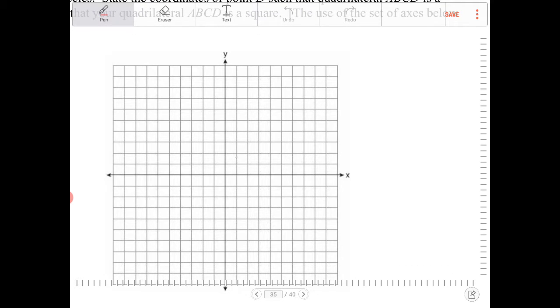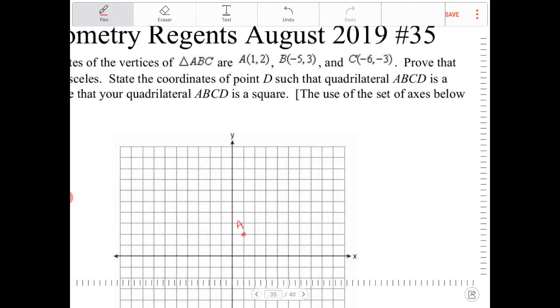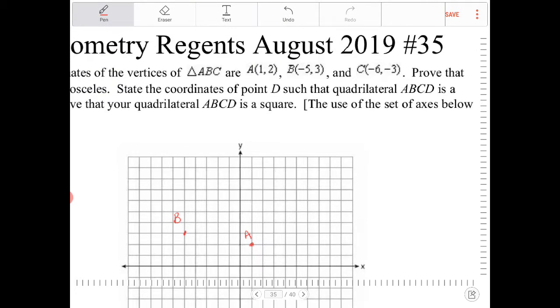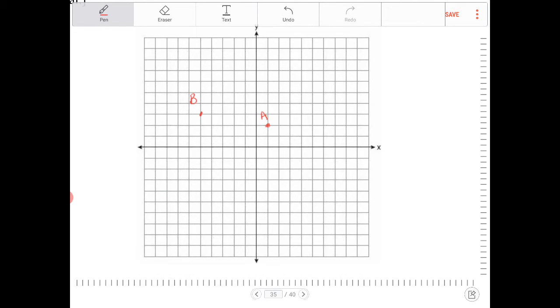So A is (1,2). B is (-5,3), so 2, 4, 5, 3, which is right here. And C is (-6,-3). Negative 6, negative 3 is here. So we connect, we connect, and we connect.